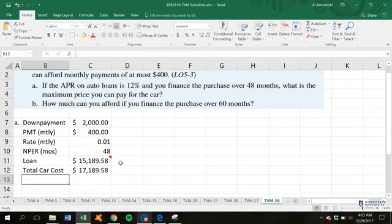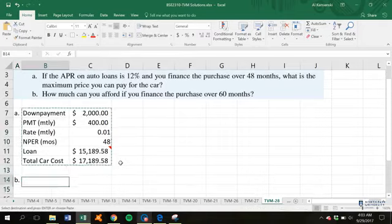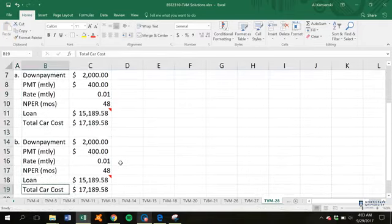Now, second part, part B, once we have part A set up, is fairly simple to work through, because it says, well, what if we're going to go ahead and finance over 60 months instead?